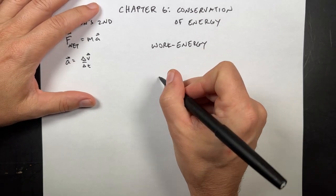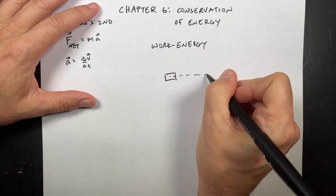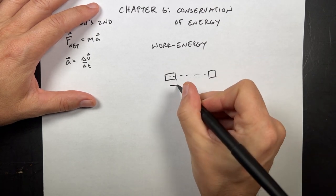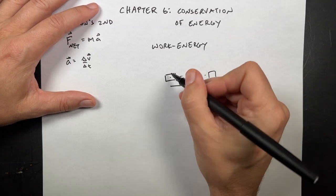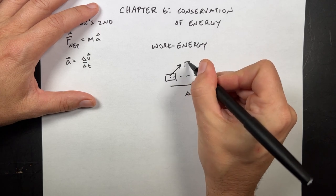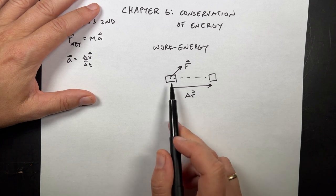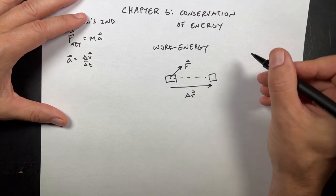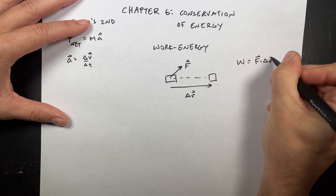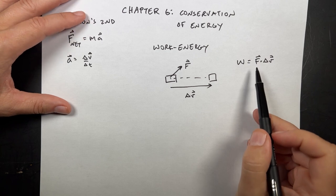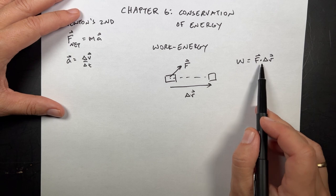We're going to define work. Suppose I have an object and it moves from here to there — there's a vector displacement delta R. Then I push on it with some force F at some angle. Then we can calculate the work done by this force as W equals F dot delta R. Here you see something that maybe you haven't seen, and it is important. The book doesn't really do this, but I'm going to.